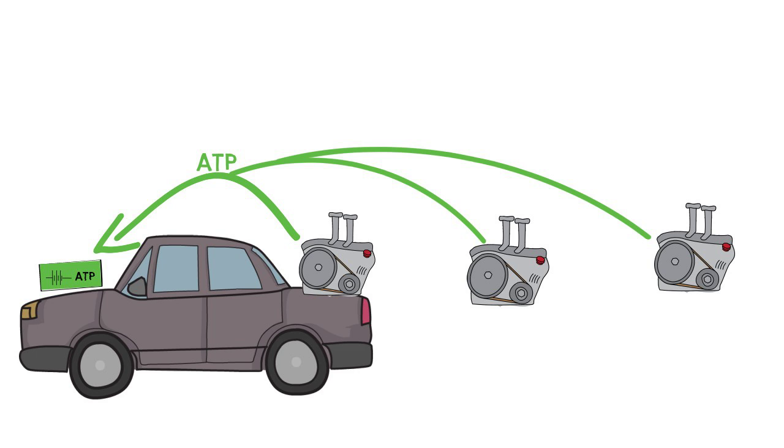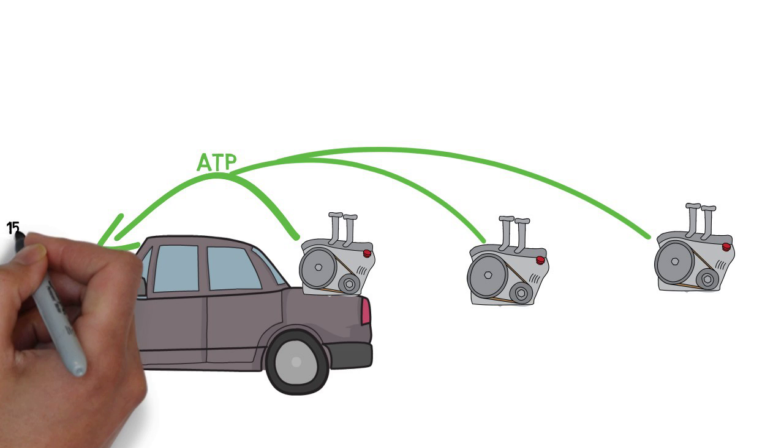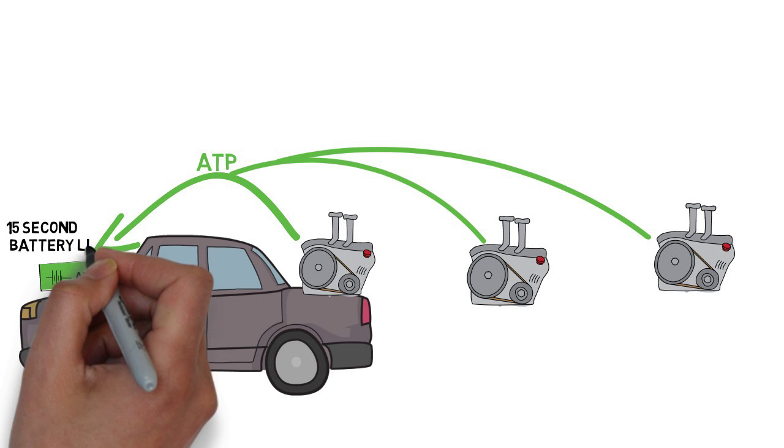So hopefully you're following so far. The muscles have a limited supply of ATP. Five to ten seconds later it's all gone. Think of the ATP supply as a laptop with a really terrible battery life.